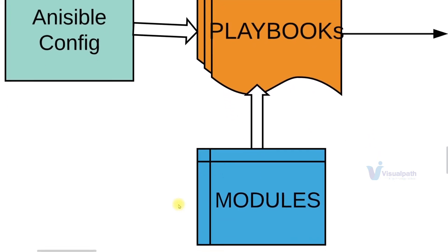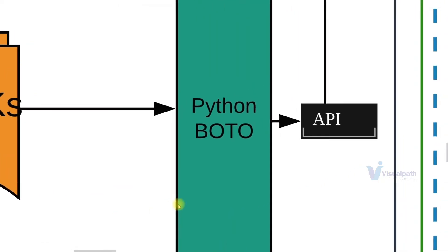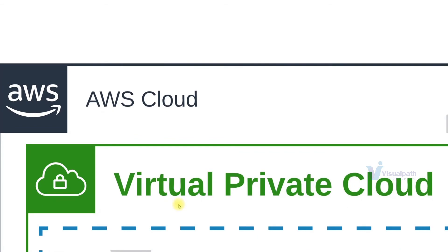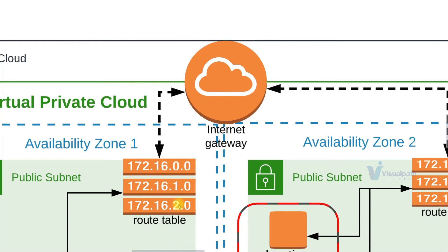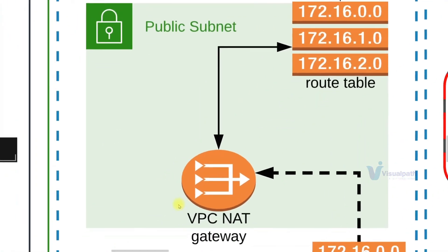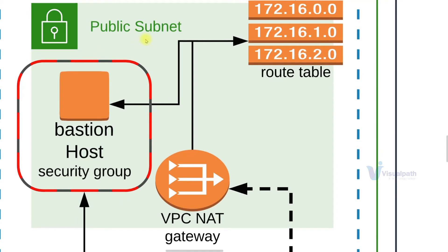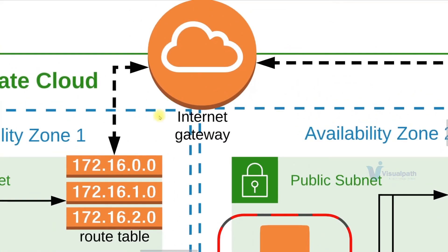These modules are going to use the well-known Python boto library, which will make an API call to our AWS cloud account. First, it will set up a VPC. That VPC will have subnets distributed across two availability zones — zone one and zone two. Each zone will have a public subnet, and the public subnets will have a route table routing requests to an internet gateway so traffic can flow to and from the internet.